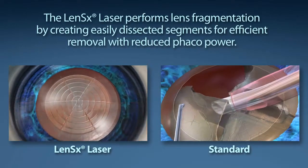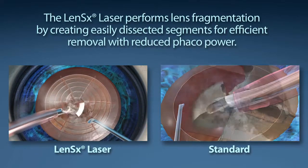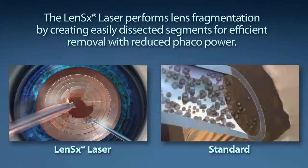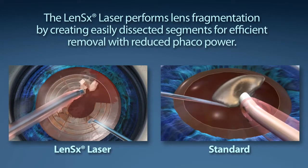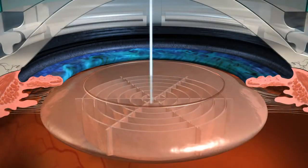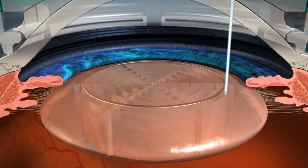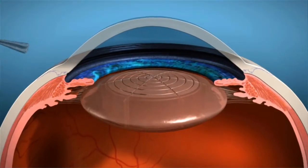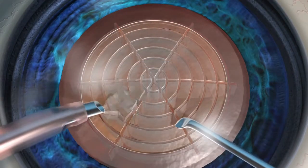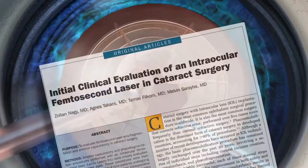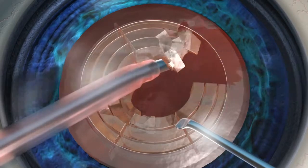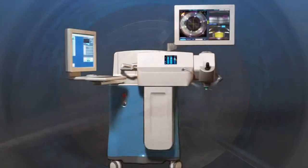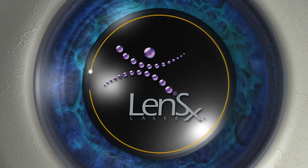Standard cataract surgery requires a phacoemulsification machine to segment and remove the content of the cataract. The goal of your surgeon is to reduce the amount of phaco energy used to remove your cataract. The LensX laser performs lens fragmentation, creating easily dissected segments for efficient removal with little or no phaco power. With the laser pulses utilized, the LensX laser provides the surgeon a 43 percent reduction in phaco power and 51 percent reduction in phaco time compared to the standard cataract procedure. LensX laser refractive cataract surgery offers a new level of precision and reproducibility in ophthalmic surgery.